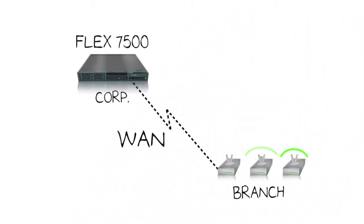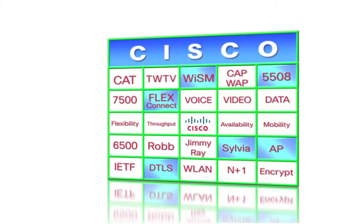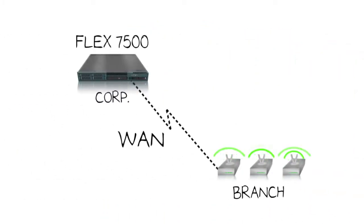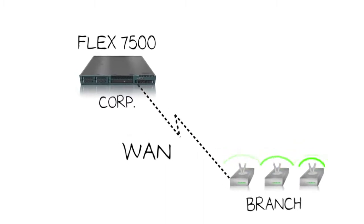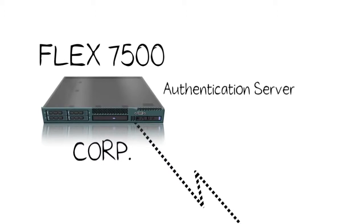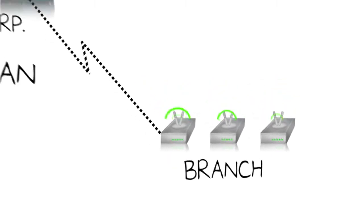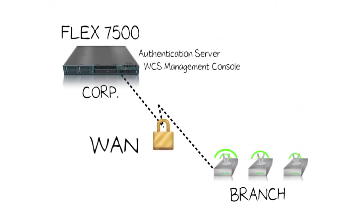Okay, let's see how this Flex 7500 is rocking it at the branch. First off, this is for a lean branch. Deployments would need no local on-site controller or IT staff. The official term is FlexConnect. And yes, we can add that to our buzzword bingo boards. Anyone win anything yet? Not yet. Alright. The config looks simple, right? The branch is connected via the WAN back to the CORP site. CORP site contains the Flex 7500 controller on authentication server and WCS management console. In the remote branch site, there are three FlexConnect-enabled access points that maintain a secure connection back to the central site.